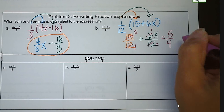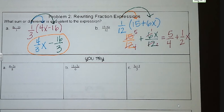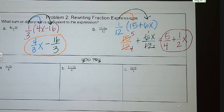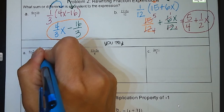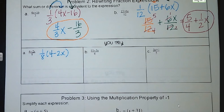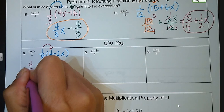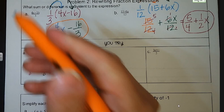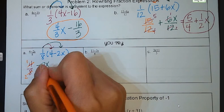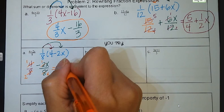Pause the video, give letters A, B, and C a try, and then we'll pick it up. For letter A, we pull out 1 eighth to distribute. Inside the parentheses we'll have 4 minus 2X. When we distribute, 1 eighth times 4 is 4 eighths, and negative 2X times 1 eighth is negative 2X over 8. We can reduce both: 4 over 8 reduces to 1 half, and 2 over 8 reduces to 1 fourth. So we'll have 1 half minus X over 4, or 1 fourth X — either way is acceptable.